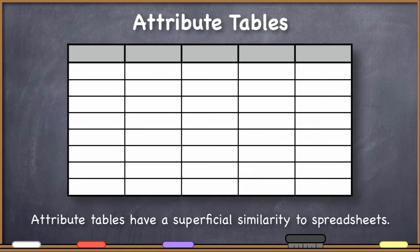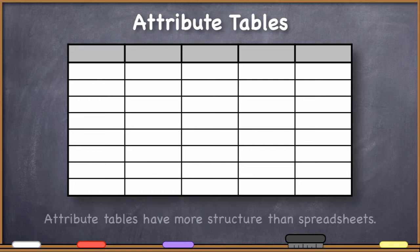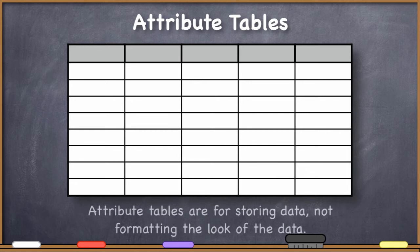Students are often very familiar with spreadsheets from using programs like Apple's Numbers or Microsoft's Excel. But there are some very important differences between attribute tables and spreadsheets. Attribute information is often stored in a simple database format, but one that's much more structured than a spreadsheet, and you have to take this structure into account when you're creating and using attribute tables.